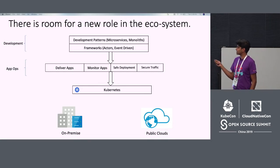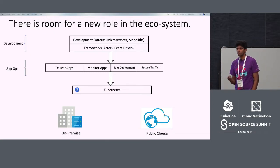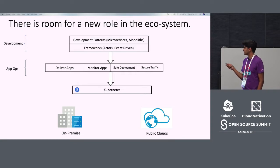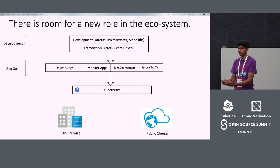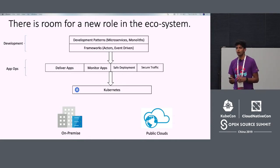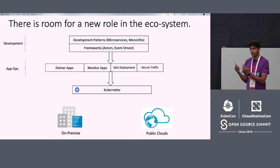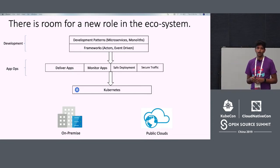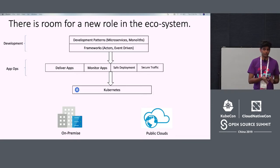We think there is room for a new role in the ecosystem that sits on top of Kubernetes, which is definitely an infrastructure orchestrator — and that is the app ops. The app ops role is responsible for delivering applications, monitoring them, taking care of safe deployment, and securing traffic. As a developer, you're responsible for just building your code and you don't really care that it runs on Kubernetes underneath the hood — the application operator would make that decision for you. You don't have to care about safe deployment practices in your enterprise; you write and iterate on your code, and the application operator takes care of using service meshes to do canary deployments and safe upgrades.